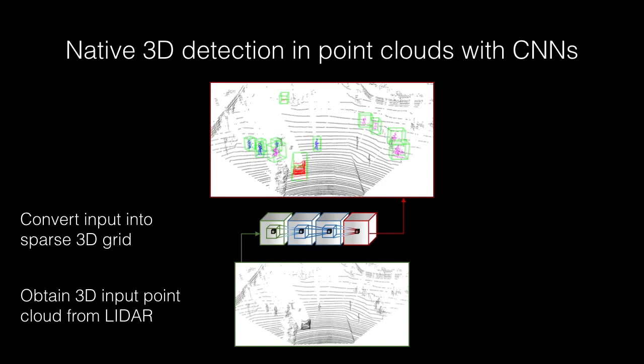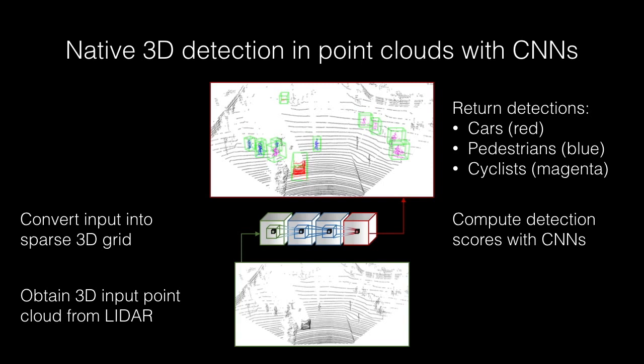After discretizing each point cloud into a 3D grid, we leverage a sparse convolution operation to build efficient convolutional neural networks for predicting detection scores. To the best of our knowledge, this is the first method which processes full 3D point clouds with neural networks natively in 3D in a scalable fashion.